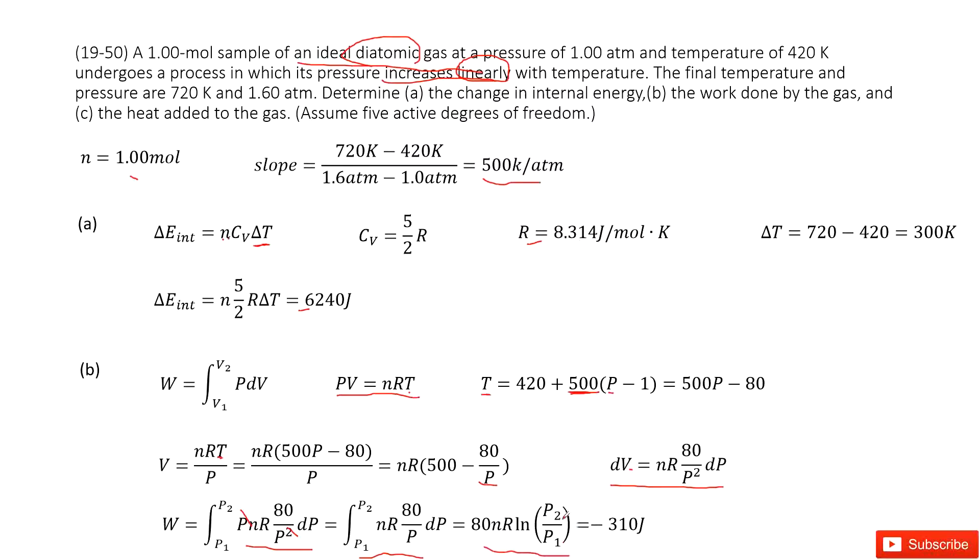Inside this function, you can see P1, P2 is given. n is given. R is a constant. So we can get the final answer there. Negative 310 joules.